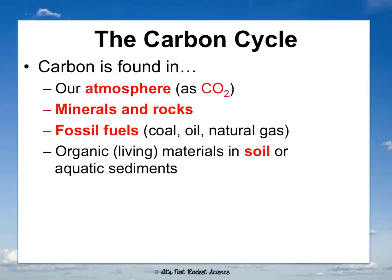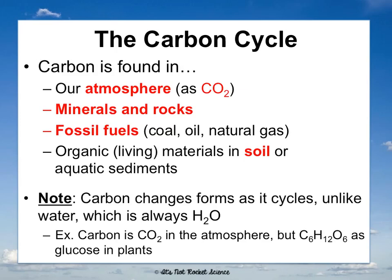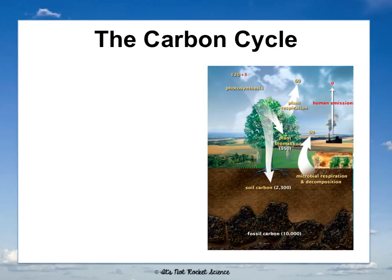What's important to note is that carbon changes forms as it cycles, unlike water. Water is always H2O chemically the entire time, whereas carbon changes. In the atmosphere it's CO2; in plants as glucose it's C6H12O6. So chemically, carbon will be in different forms as it cycles.